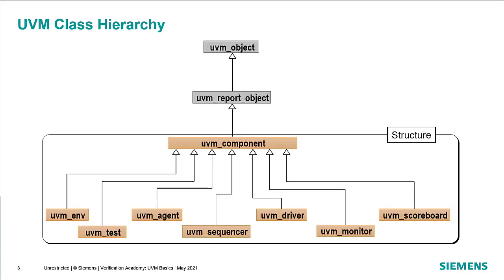If we look at the UVM class hierarchy, we start with UVM object, which we've talked about before. UVM report object is extended from UVM object, and it includes infrastructure which allows us to report messages out of UVM. UVM component extends from UVM report object, and that is the base component type that we use. There are a number of specific components extended from UVM component that allow us to communicate what role a particular component is intended to play — whether it's a UVM environment, a UVM test, an agent, or a UVM driver. The idea is to use these components to communicate what you intend that particular component to do. Some have distinguishing features; some are just shells that extend from UVM component to communicate intent, but they're still useful.